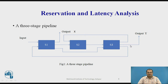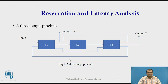The third type is the feedback connection. S3's output is fed back to S2 as an input, which is why it is called a feedback connection. Similarly, S3 to S1 is another feedback connection. So the pipeline is made up of these three types of connections.